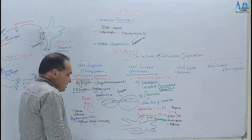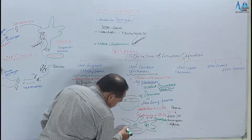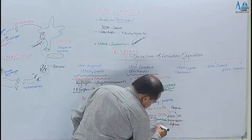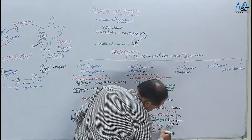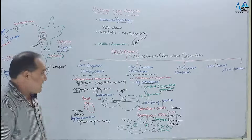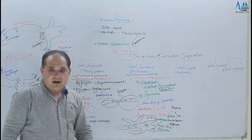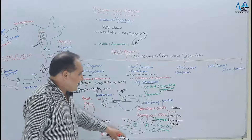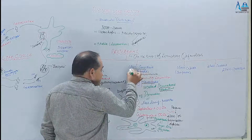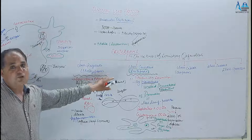Pseudopodia ki formation vacuoles ki contraction ki wajah se hoti hai — sol into gel aur gel into sol mein protoplasm change hota hai aur finger-like structure banti hai. Yeh pseudopodia banne aur khatam hone ka silsila continue rehta hai, jis wajah se yeh kisi bhi medium mein move kar sakta hai. Isi liye is movement ko pseudopodial movement kehte hain aur Sarcodina ko Rhizopoda — false feet wale — bhi kehte hain.